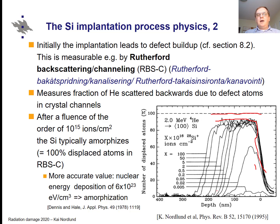For typical dopants, amorphization happens at fluences of the order 10^15. If the ions are very light or very heavy this may differ, but a more accurate estimate from an old 1970s study says that if the nuclear energy deposition — which BCA and MDREA can also give — is of the order 6×10^23 eV per cubic centimeter, you get amorphization.